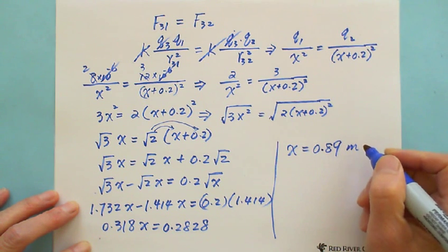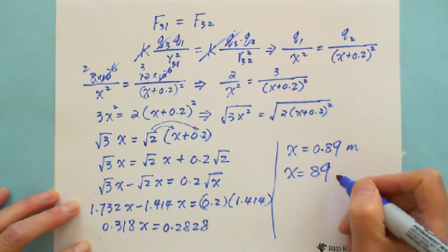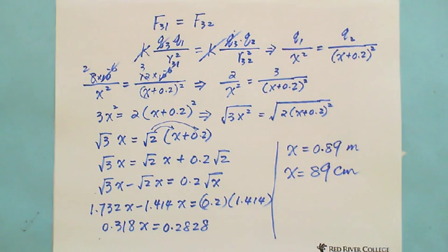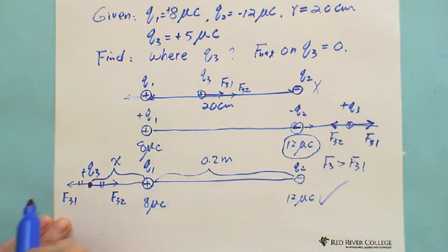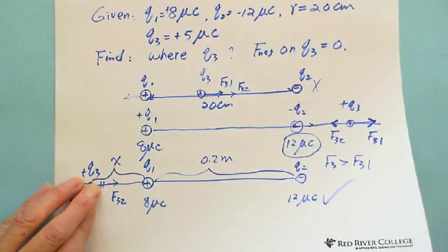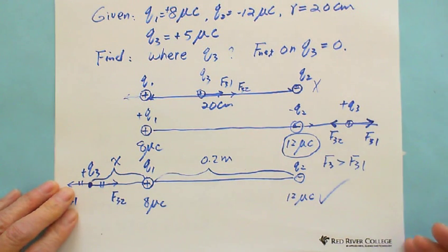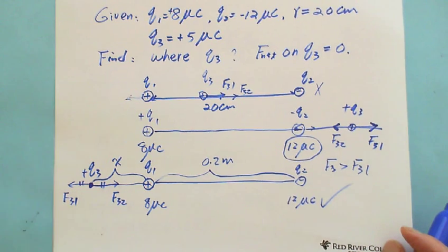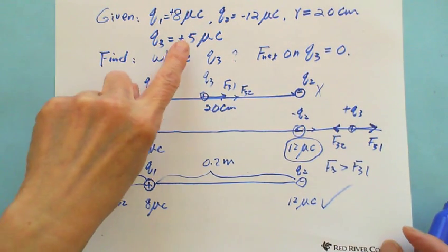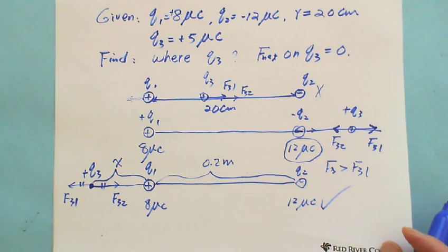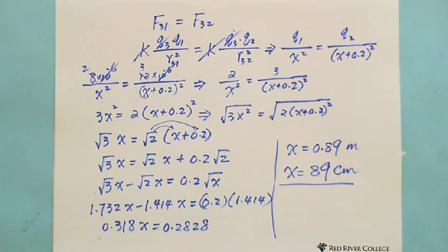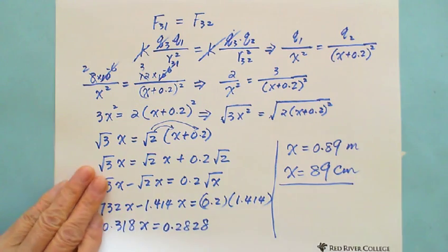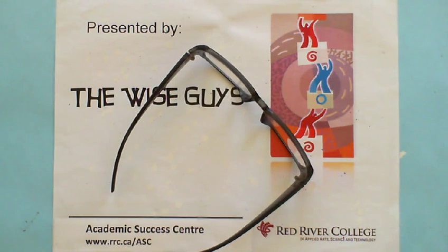Dividing: X equals 0.2828 divided by 0.318 equals 0.89 meters, which equals 89 centimeters. So Q3 should be placed 89 centimeters to the left of Q1. At that point, if Q3 is 5 microcoulombs, the net force on it will be 0 — Q3 will be balanced. This is presented by Wiseguys — thank you.